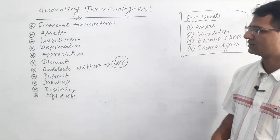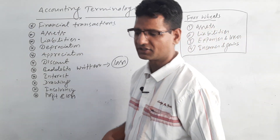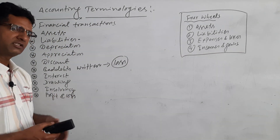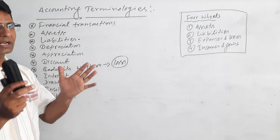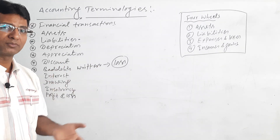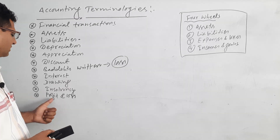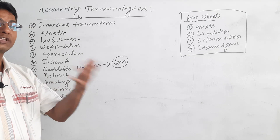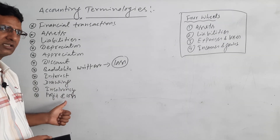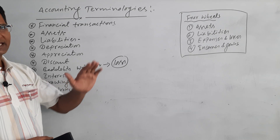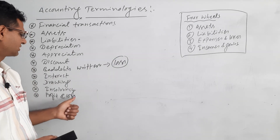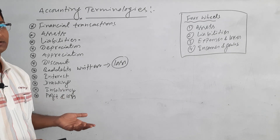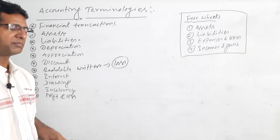Profit and loss is the result of business. Businesses are established to earn profits. If income is more than expenses, that is known as profit. If expenses are more than incomes, that is loss. Both situations can happen in business.